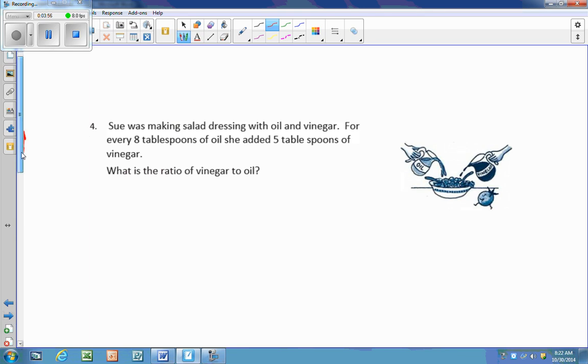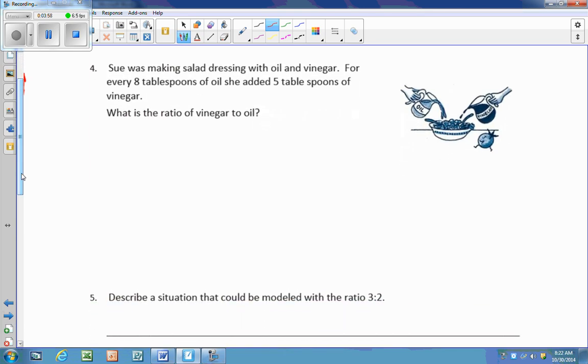Number four, Sue was making salad dressing with oil and vinegar. For every eight tablespoons of oil, she added five tablespoons of vinegar. What is the ratio of vinegar to oil? So again, I'm going to make sure I circle and underline in the problem. And then I'm looking at what they're asking me, the ratio of vinegar to oil. So I go back and here is my vinegar. So it's going to be five to eight.